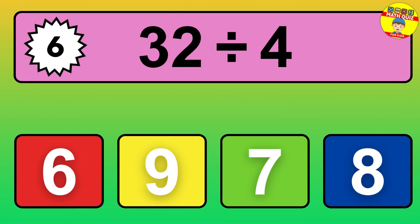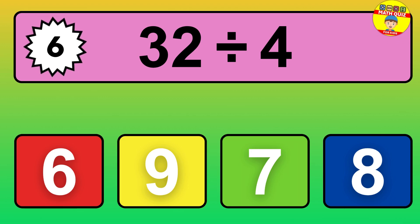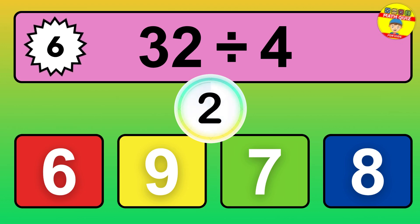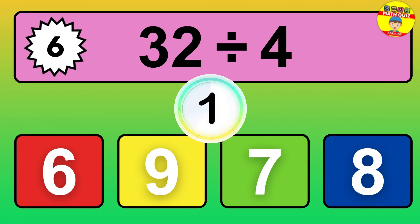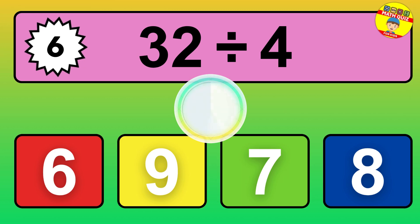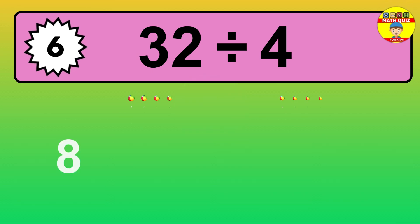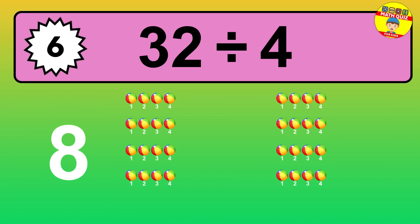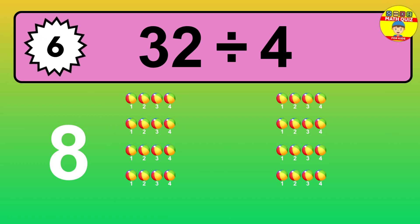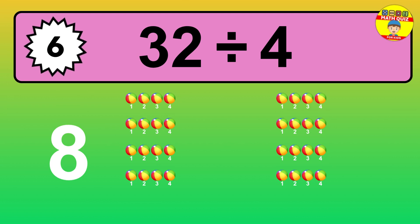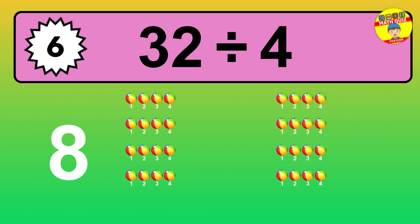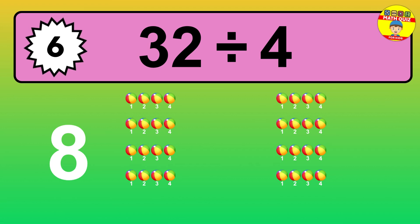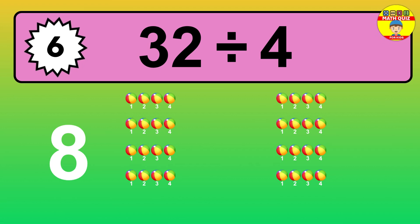32 divided by 4 — time to think! Let's go to the solution. Divide the number 32 by 4. Each group contains 4 units, so dividing 32 by 4 results in 8 equal groups. Thus, the result is 32 divided by 4 equals 8.